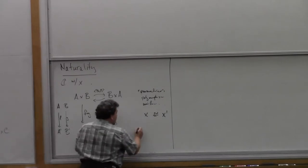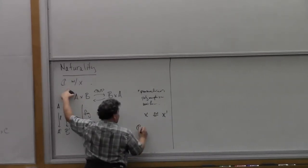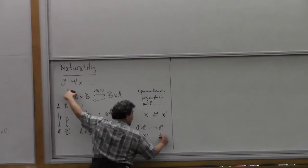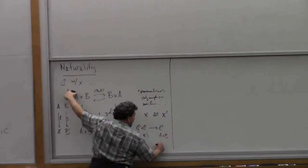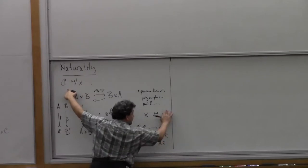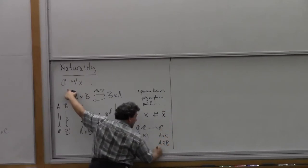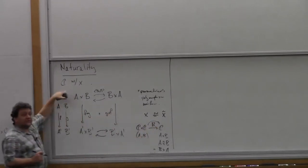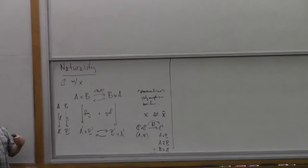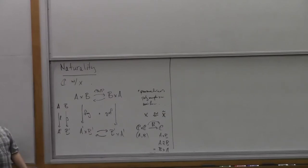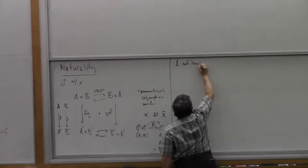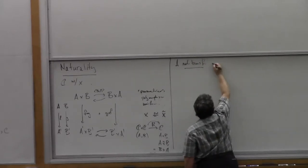So where do these functors go? They go from our category C crossed itself down to C. It takes two arguments A and B, and returns on the one hand A cross B, and on the other hand this twisted thing — B cross A. Now I'm saying I have these two functors, and the functors themselves are isomorphic to each other as functors. So what we need is a notion of morphism of functors, and that's what a natural transformation is.